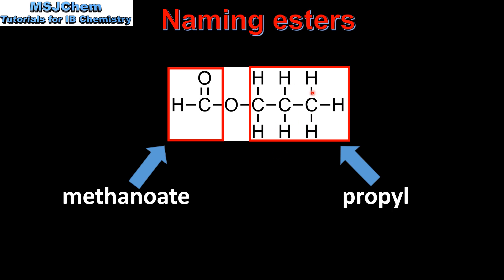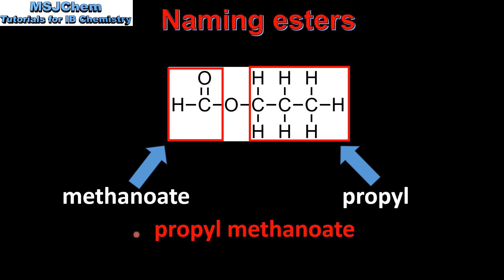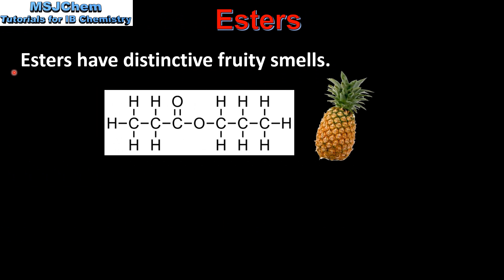Looking at the naming: we have a 3-carbon alcohol, propan-1-ol, that becomes propyl. We have a 1-carbon carboxylic acid, methanoic acid, that becomes methanoate. The name of the ester is propyl methanoate.